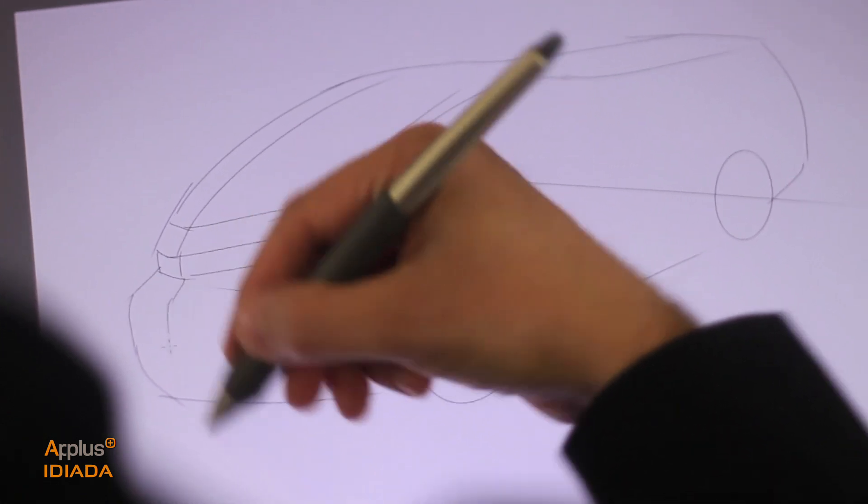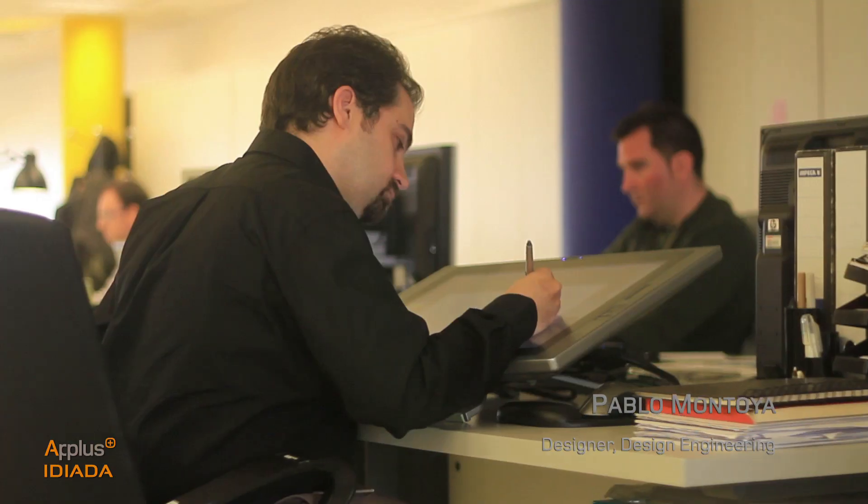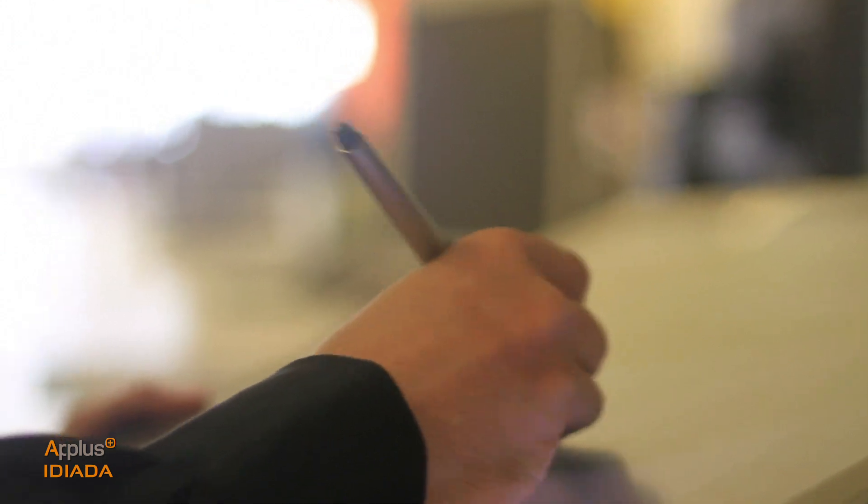We began with a blank page in terms of design, layout, styling—everything. Since the E-BORN3 runs on electric motors located inside the wheels and we don't have an engine bay taking up space at the front, this gives us freedom to explore new ways of packaging.